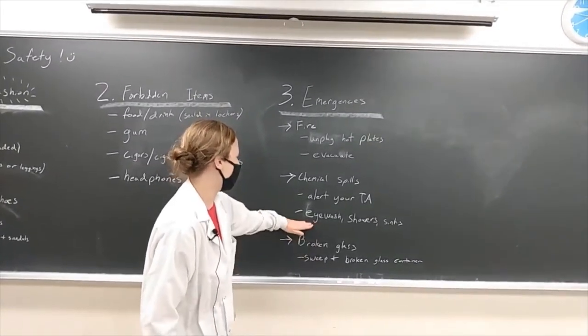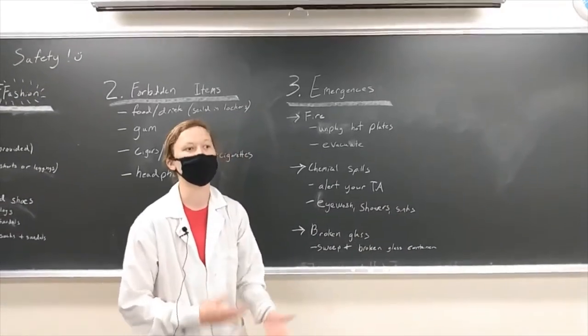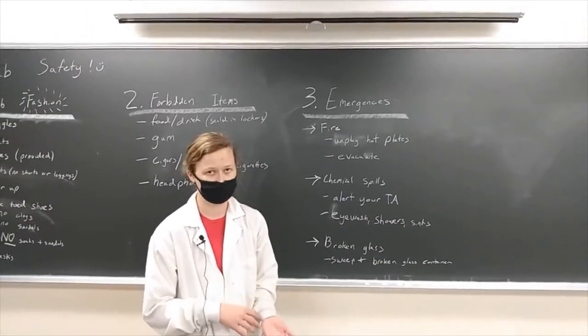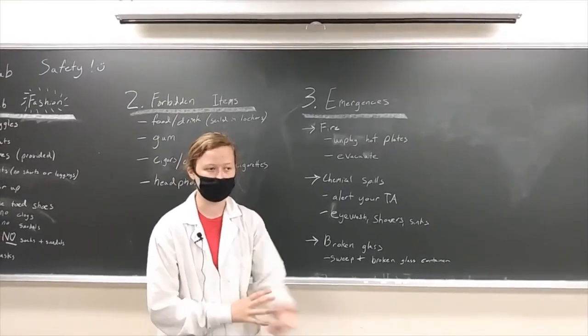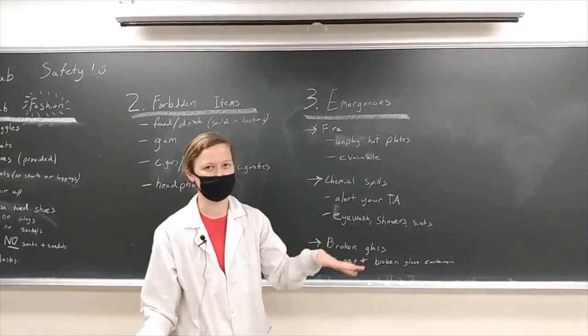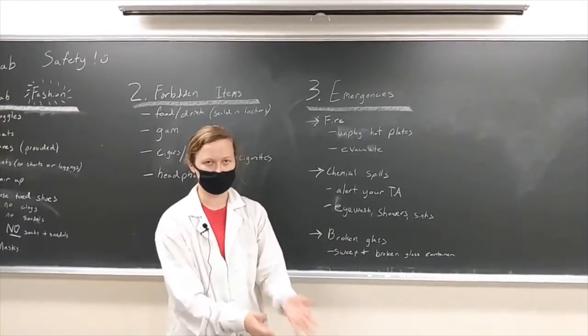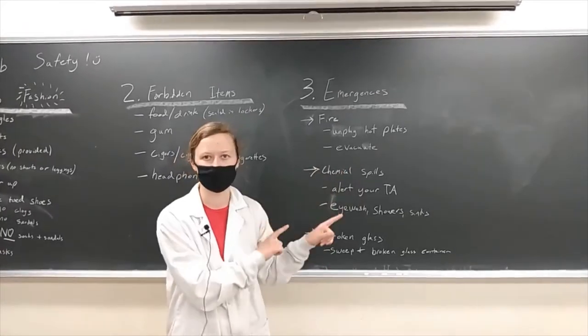And then we're going to talk about the eye wash, showers, and sinks. If you do spill a large quantity of chemicals on yourself, or if you spill just a little bit of a very caustic chemical, you'll need to rinse it off under a sink if that's an extremity that you can get under a sink, or if it's in your hair or something, in the shower. If it's in your eyes, it's in the eye wash. You have to stay under the water to rinse off for about 15 minutes. We'll check those out in just a second.